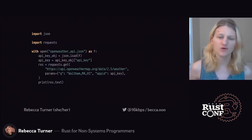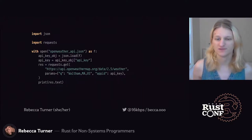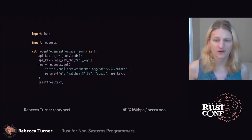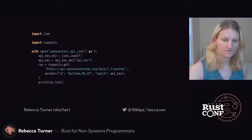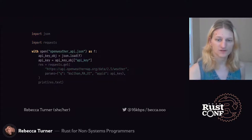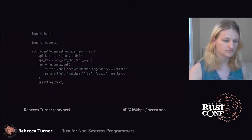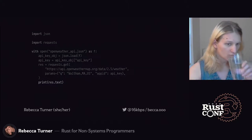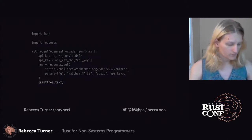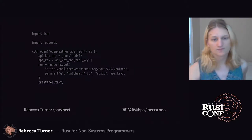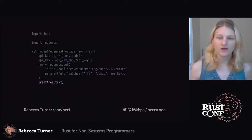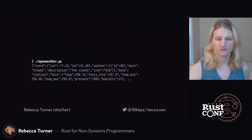Weather APIs come and go, but right now Open Weather is providing decent data for free, even if the default units are Kelvins. Here's a simple call of their API in Python. First, we load the API key from a JSON file, then we make a request, and finally we print out the response text. When we run it, we get a minified JSON blob as output, so let's work on recreating this in Rust.